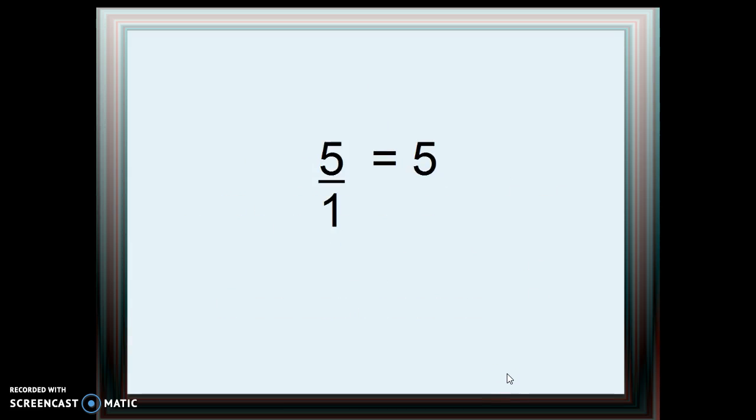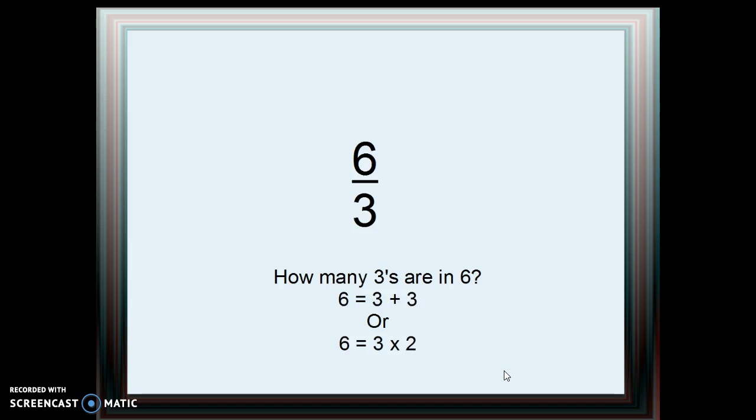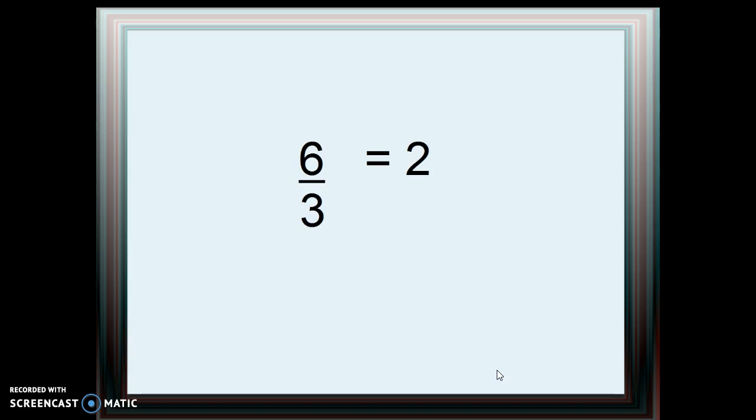You may have seen this so many times that you didn't think about what it means. Let's look at another: 6 divided by 3. How many 3's are in 6? Well, 6 equals 3 plus 3, or 3 times 2. Therefore, there are two 3's in 6, so 6 divided by 3 equals 2.